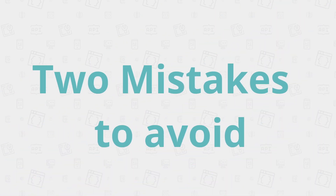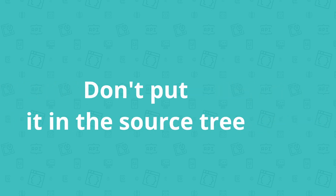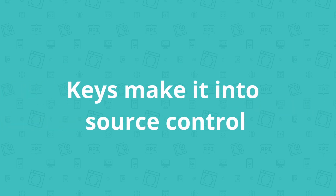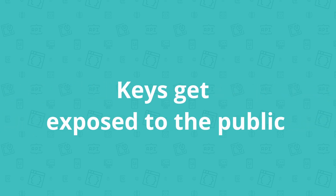If you work with API keys, there are two real rookie mistakes that can blow up your whole application security. But once you're aware of them, it's pretty easy to avoid them. First, never embed your API key directly into your code, and also don't put it in any file within your application's source tree. Both are very critical because it's almost certain they will make their way onto GitHub and become public. It wouldn't be the first time that happened to someone.